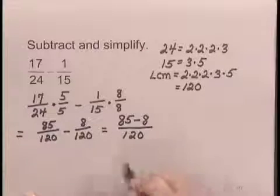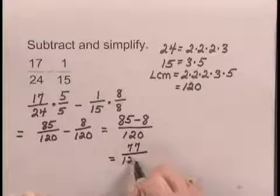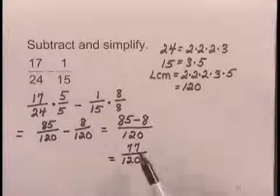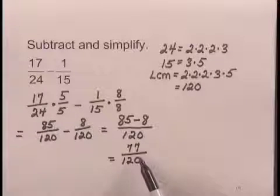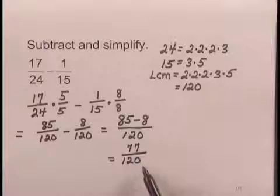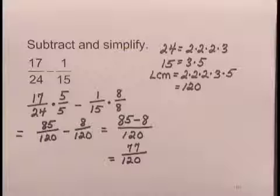And carrying out the subtraction, we get 77 over 120. We do need to check if we can simplify. I notice that 77 is 7 times 11, and neither 7 nor 11 is a factor of 120, so this cannot be simplified. And 77 over 120 is the simplified answer to the problem.